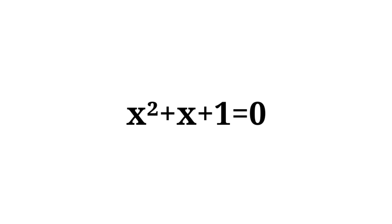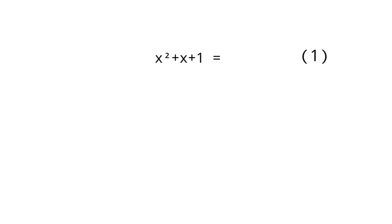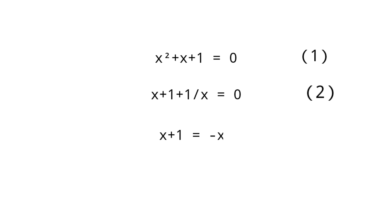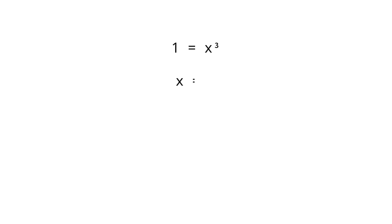Method 2: using x squared plus x plus 1 equals 0. Let's take x² + x + 1 = 0 as equation 1. Dividing both sides by x gives x + 1 + 1/x = 0 (equation 2). From equation 1, x + 1 equals minus x squared. Substituting into equation 2 gives minus x squared = 1/x, that is 1 equals x cubed, so x equals 1.